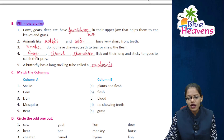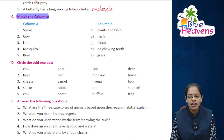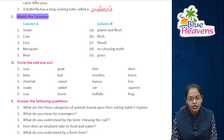Now let's do exercise C — match the columns. Match column A to column B. Snake — no chewing teeth — matches D.